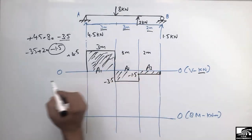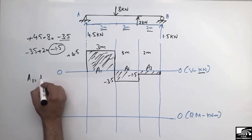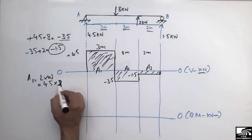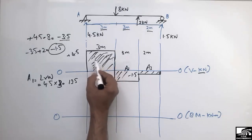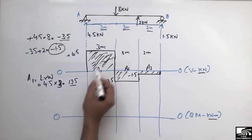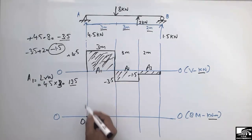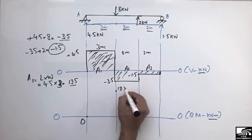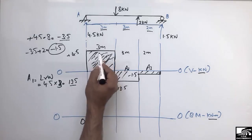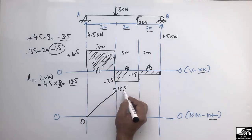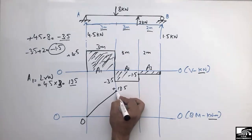To find A1: area equals length times width, which is 4.5 multiplied by 3 meters, giving 13.5 kNm. The bending moment starts at zero at support A because it is a hinge support, not a fixed support, so the moment is zero there. The diagram rises to 13.5 kNm at the location of the first concentrated load. Since this block is above the zero-zero line, it is a positive moment, so we draw the line up to 13.5 kNm.